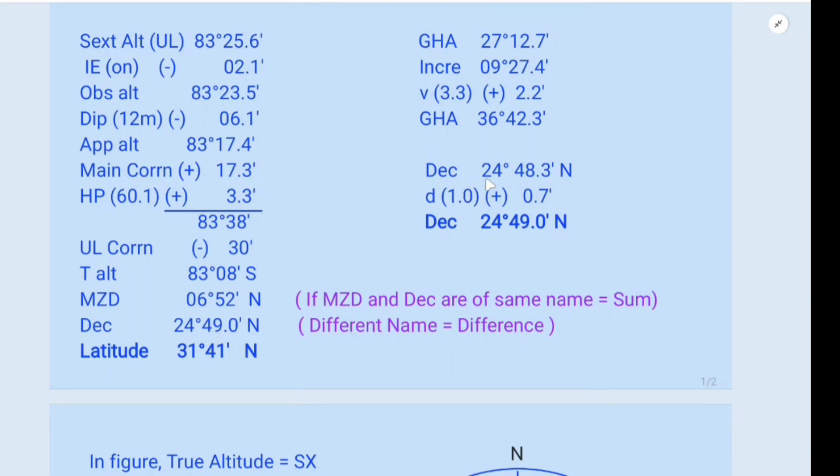Declination referring to the 16th January from the Almanac. Declination for moon is 24 degrees 48.3 north. And d correction is 1.0, so you have to add 0.7 minutes. So you get declination as 24 degrees 49.0 north. So declination north, MZD north, you add together you get the latitude.